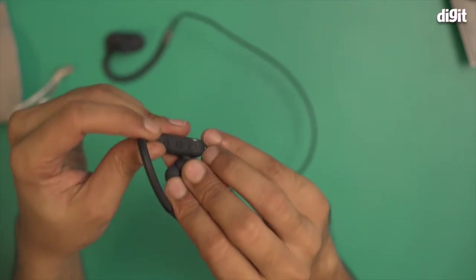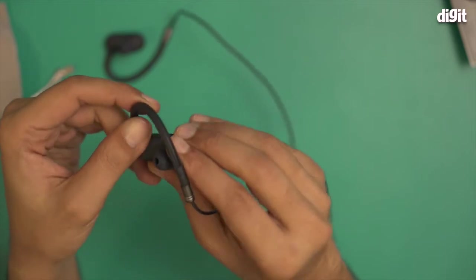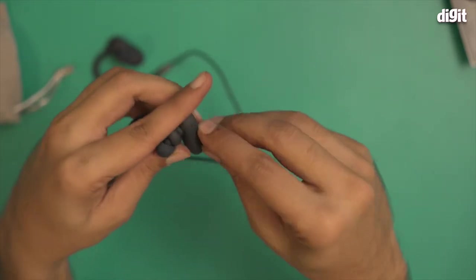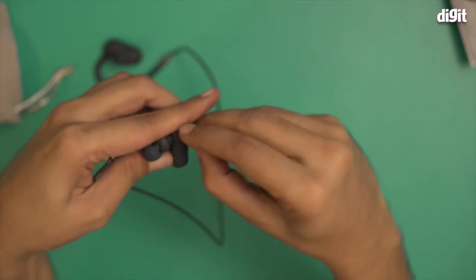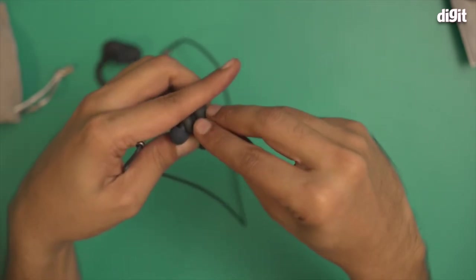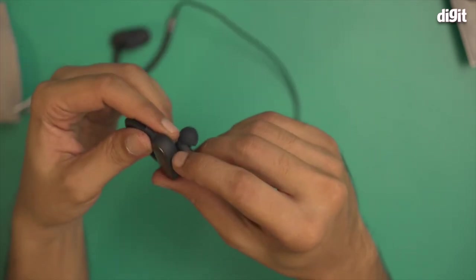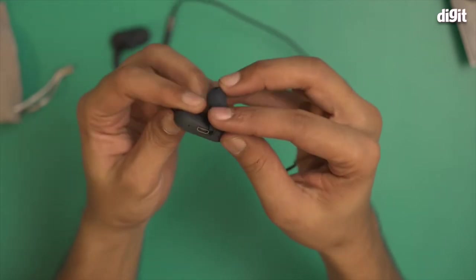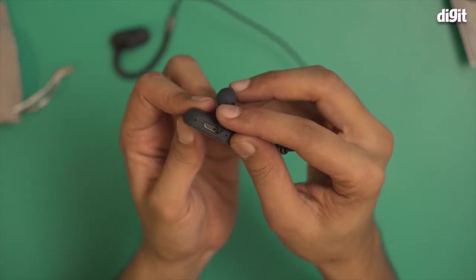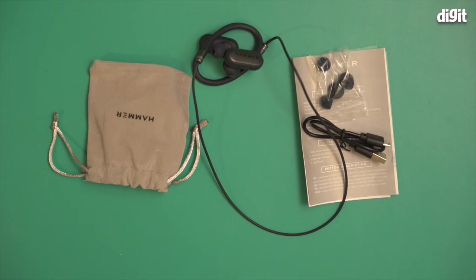Over here you have some inline controls as well. There is a power button along with the volume up down button. On the underside of the same earbud side you have a flap. This is basically the charging trap, this is a micro USB port. This is what you find inside the box containing the hammer grip wireless sports earbuds. Thank you for watching.